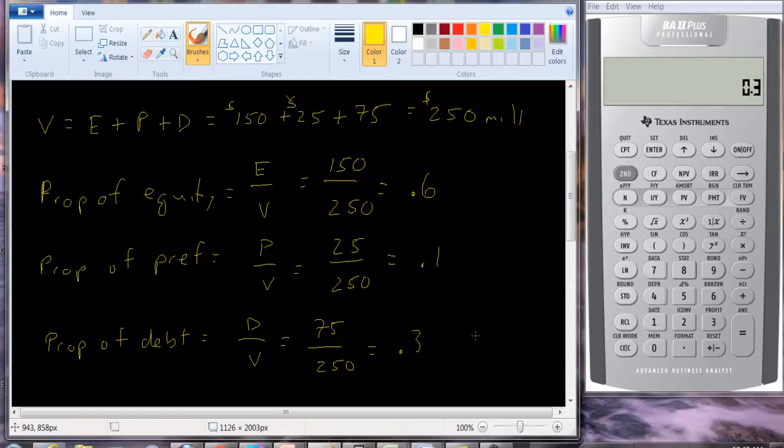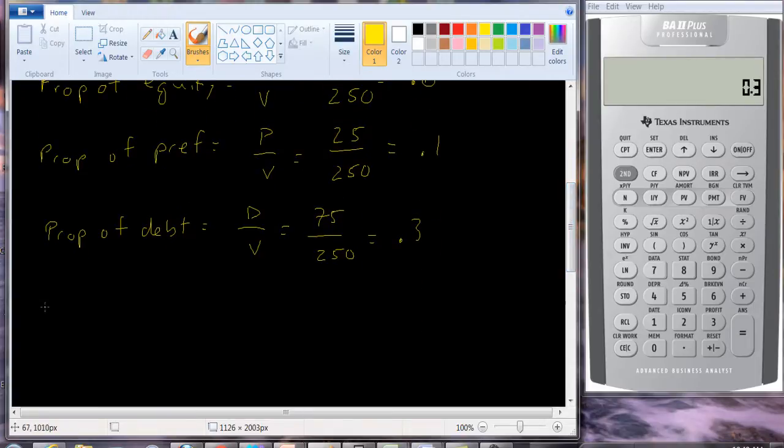let's figure out what the weighted average cost of capital is. The weighted average cost of capital is defined as the proportion of equity times the return equity holders require, plus the proportion of preferred stock times the return that preferred stockholders require. And recall that in the previous tutorials, we showed how to calculate these. Return on equity could be calculated using the constant growth dividend formula. It could also be calculated using the security market line equation. Preferred stock's return is generally calculated as the dividend yield. Take the dividend, divide it by the price. That gives you the return that preferred stockholders require.